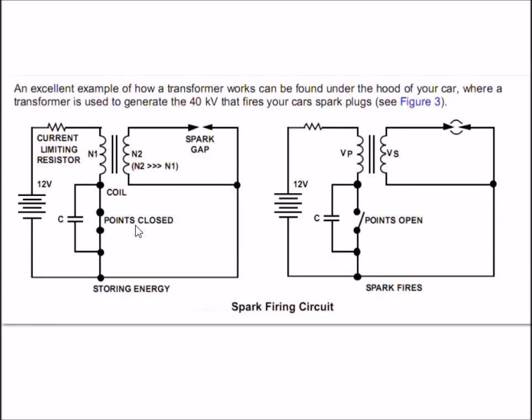Here you're going to see the old style point condenser ignition system that was used in cars years back. Today we don't use points, we use electronic switching, but it works the same. When the points close, a current will flow through the primary of this transformer. That's what your coil is, it generates your spark, it's a transformer. And it's a very high inductance value on the secondary side, N2 is far greater than N1, the primary side.